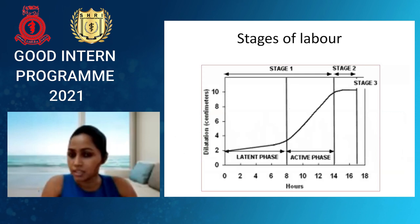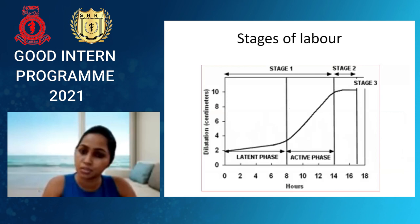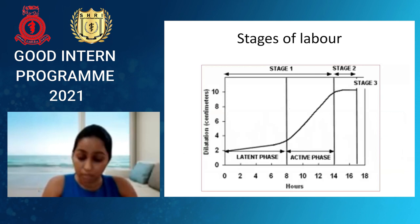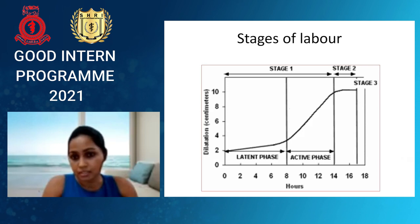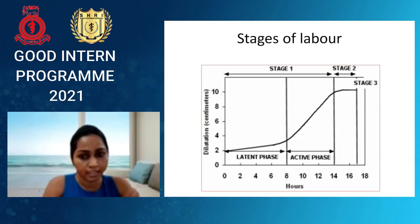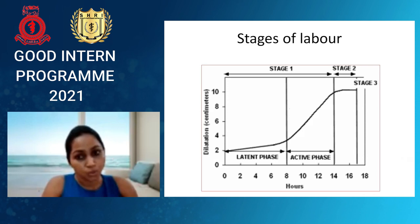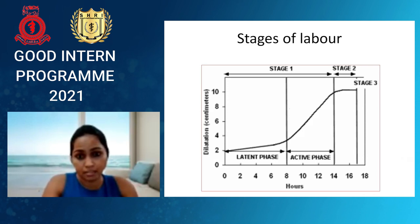The stages of labour: Stage one is divided into two phases — latent phase and active phase. Stage two is divided into passive phase and active phase. Stage three, at the end, can be managed in two ways, which we are going to discuss in the next slide.